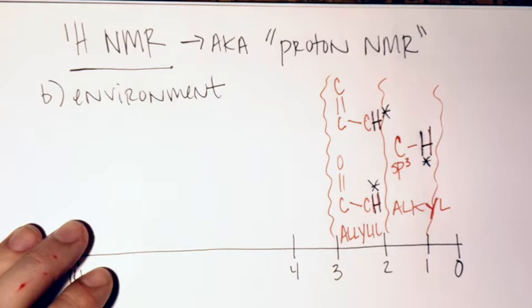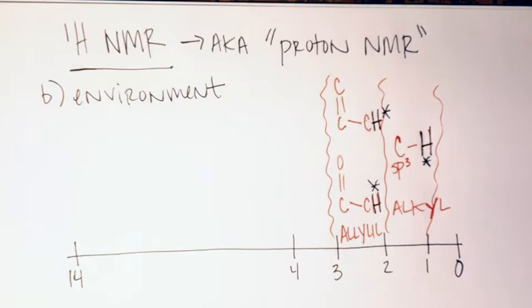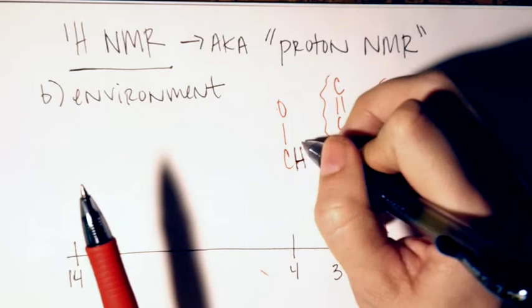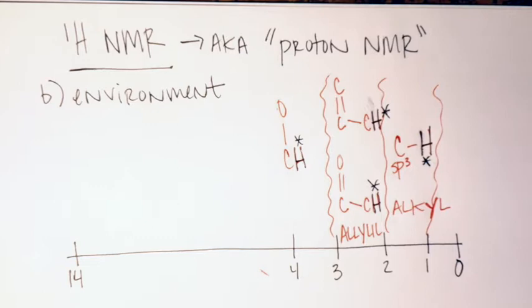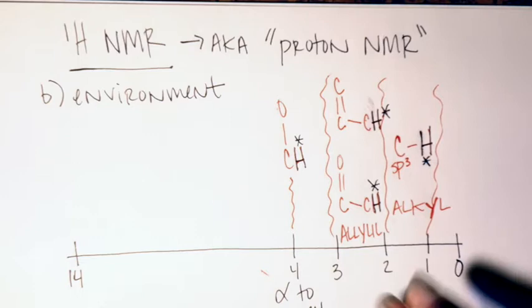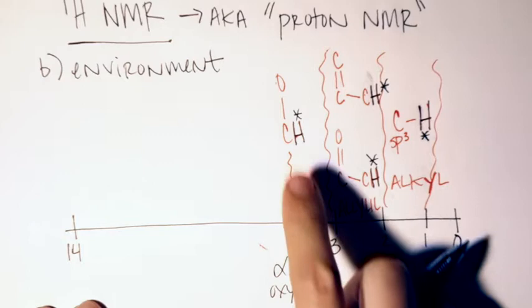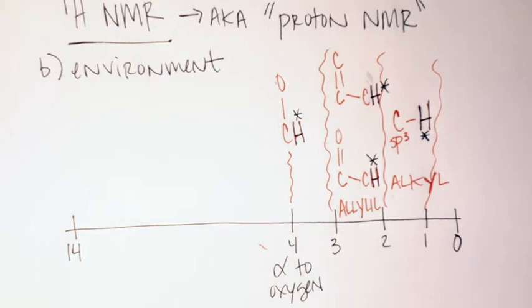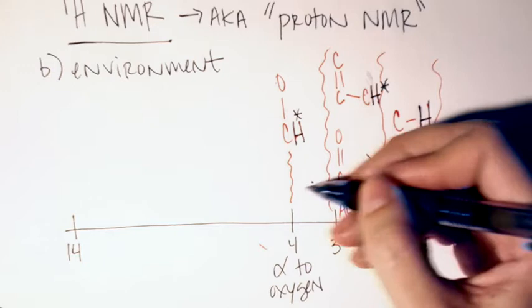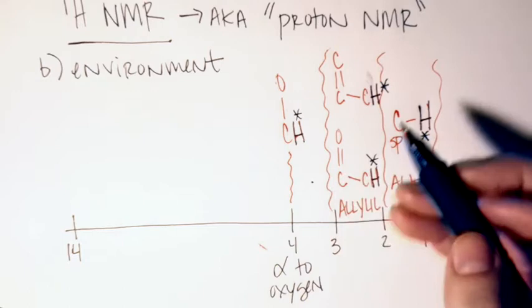To pull it even further downfield, around four PPM is where you get hydrogens that are alpha to an oxygen — still on an SP3 carbon, but now it's alpha to that oxygen. Those tend to show up right around four. The more electronegative the atom, the more it will deshield. Oxygen is the most electronegative atom you'll usually see. If it's alpha to a nitrogen you'd expect around 3.5, and a halogen might be around three — less electronegative means less deshielded.